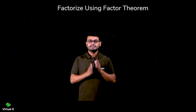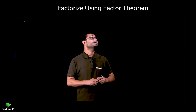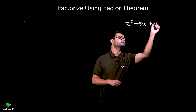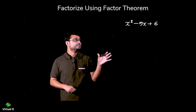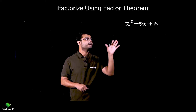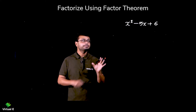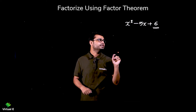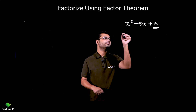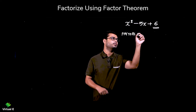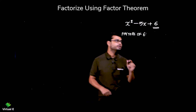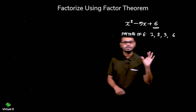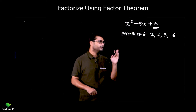First of all let's start with the quadratic, then we will move to the cubic polynomial. Let's take an example: x squared minus 5x plus 6. Now, to apply the factor theorem, we start with the constant, which is 6. We need to take the factors of 6: the factors of 6 are 1, 2, 3, and 6.